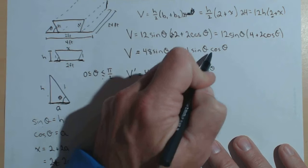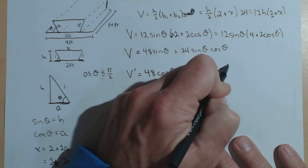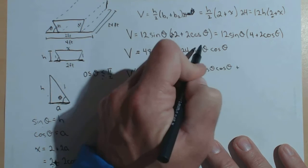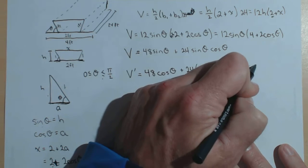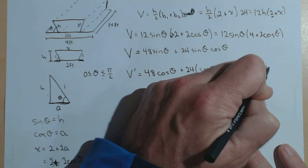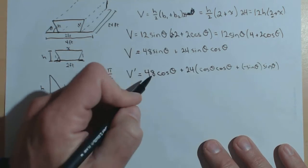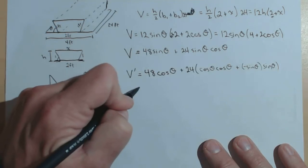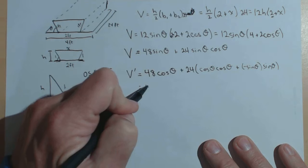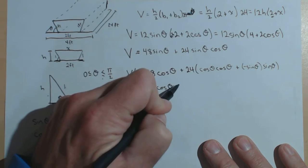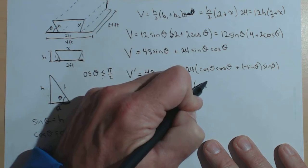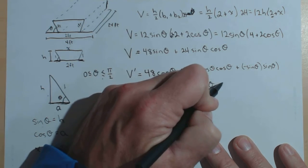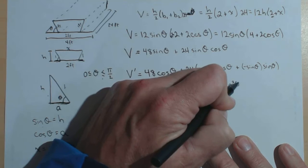So, let's do the derivative of sine theta, which is cosine theta. Leave cosine theta alone. Plus, the derivative now of cosine theta is negative sine theta, leaving sine theta alone. So, putting this mess together, we've got 48 cosine theta plus 24 cosine squared theta minus sine squared theta.